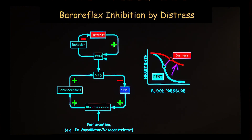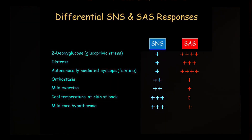This applies to understanding why people faint. Now, Cannon taught that the sympathoadrenal system functions as an emergency system to maintain homeostasis — but that's not entirely correct. There are examples where sympathetic noradrenergic system activity is going one way and sympathetic adrenergic system activity is going another way. For instance, distress mainly involves adrenal medullary activation, and whether sympathetic noradrenergic activation occurs depends on which target organ you're looking at.